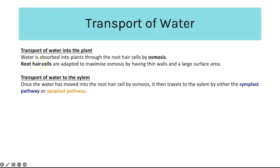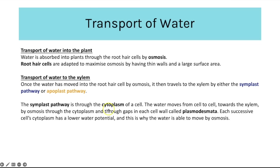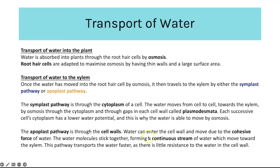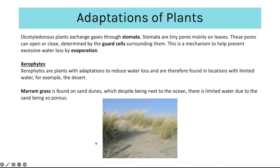Once water is inside root hair cells it must move to the xylem via either the symplast or apoplast pathway. The symplast pathway is when water moves through the cytoplasm of a cell, moving from cell to cell towards the xylem by osmosis and through plasmodesmata. Each successive cell cytoplasm has a lower water potential, allowing water to continually move toward the xylem. The apoplast pathway is when water moves through cell walls — water molecules stick together due to hydrogen bonding and cohesive forces, forming a continuous stream moving towards the xylem. This pathway is faster as there is little resistance.